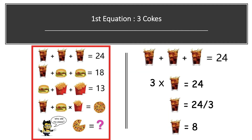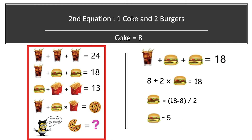Here we go. In the first equation we have three coke glasses whose sum is equal to 24. Solving this equation: 3 × one coke glass = 24, so one coke glass = 24 ÷ 3 = 8. By the end of the first equation, one coke glass equals 8.